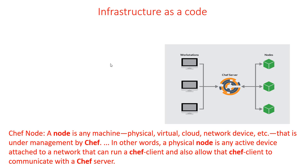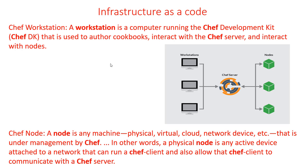A Chef node is any machine — physical, virtual, cloud, or network device — that is under management by Chef. A physical node is an active device attached to the network that can run Chef Client and allow that Chef Client to communicate with the Chef Server. Any system you manage on the cloud is called a node.